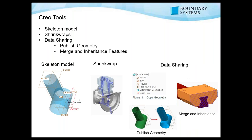These are the tools I've handpicked. Skeleton models are the most important one as soon as you start using top-down design. Shrink wraps are a tool that's there to make your life a lot easier when working with large assemblies. Then we're going to work with some data sharing tools — publishing geometry, and the merge and inheritance features. I've included merge and inheritance to show there are tools a lot easier than using normal references, extrudes, and things like that to get information from other models or parts.